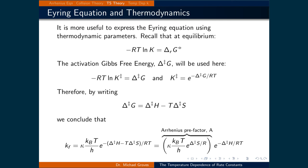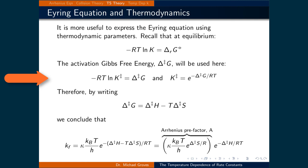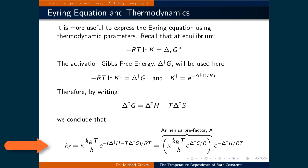Since we are using a thermodynamic framework to describe the rate constant, we can relate the equilibrium constant to the Gibbs free energy. Recall that minus RT times the natural logarithm of the equilibrium constant is equal to the change in the standard Gibbs free energy of the reaction. Since we are now talking about an equilibrium between the reactants and an activated complex, we are discussing the activation Gibbs free energy, denoted as delta G double dagger. When substituted into the above relationship and solved for the equilibrium constant K double dagger, we get the equilibrium constant equal to e raised to the power of negative delta G double dagger over RT. We can also express the activation Gibbs free energy as the activation enthalpy minus the temperature times the activation entropy.